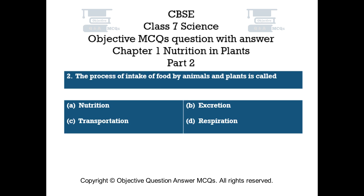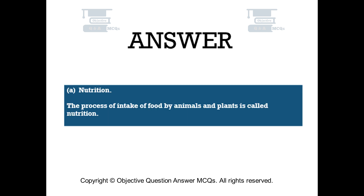Question number 2: The process of intake of food by animals and plants is called. Option A: nutrition. Option B: excretion. Option C: transportation. Option D: respiration. The right answer is option A — nutrition. The process of intake of food by animals and plants is called nutrition.